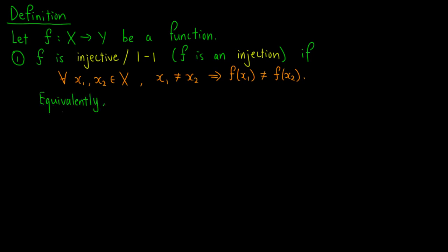Equivalently, we can consider the contrapositive statement, which is that for all elements x1 and x2 in X, f of x1 equals f of x2 implies that x1 equals x2. This means that f is injective if different inputs give different outputs, or equivalently, whenever the outputs are the same, the inputs also have to be the same.